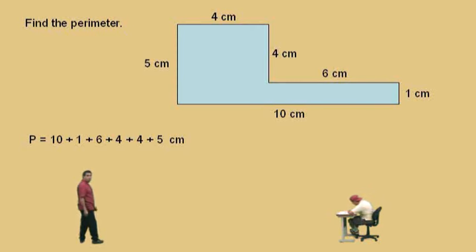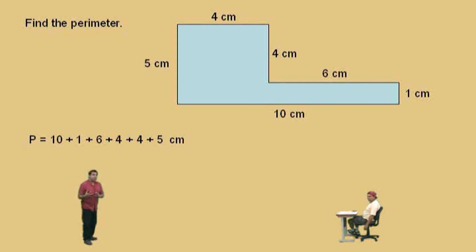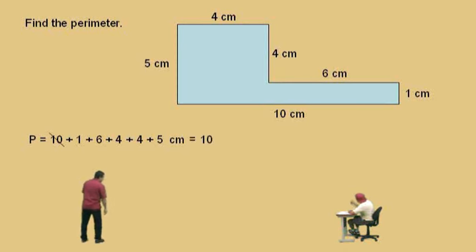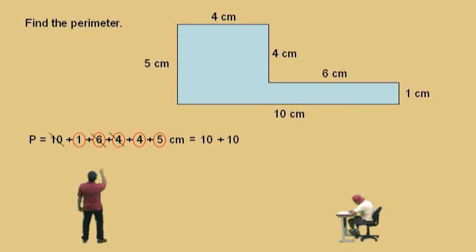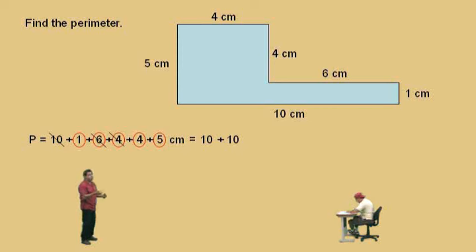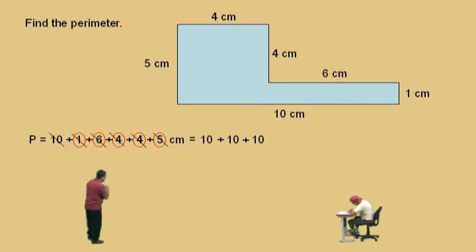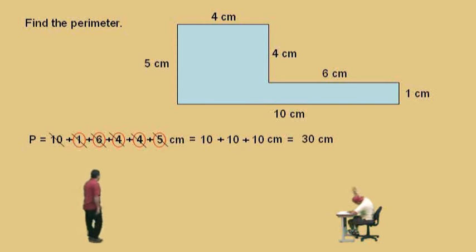Now we're going to do what we call Kung Fu Math. When you're adding numbers together, you can actually add in any order. What we're going to do is take this 10 and put it over there. Now, how much is 6 and 4, Charlie? Ten. So let's write 10 over there and cross those out. What's left over — we have a 1 and a 4 and a 5. 1 and 4 is 5, and 5 and 5 is 10. We'll put a 10 over there and cross those out. What's 10 plus 10 plus 10, Charlie? 30. Thirty centimeters — very nice. Don't forget to box your answer.